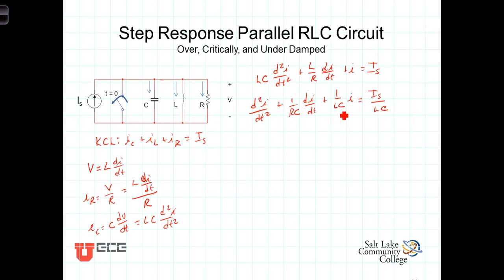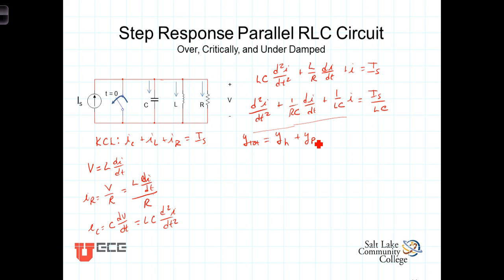We have a second order linear time-invariant differential equation equal to the constant I sub S divided by LC. From differential equations, the solution for the non-homogeneous equation — call it Y total — equals the solution for the homogeneous case, which is the equation set equal to zero, plus a particular solution that is of the form of the forcing function on the right-hand side. The homogeneous solution is A1·e^(S1·T) plus A2·e^(S2·T).